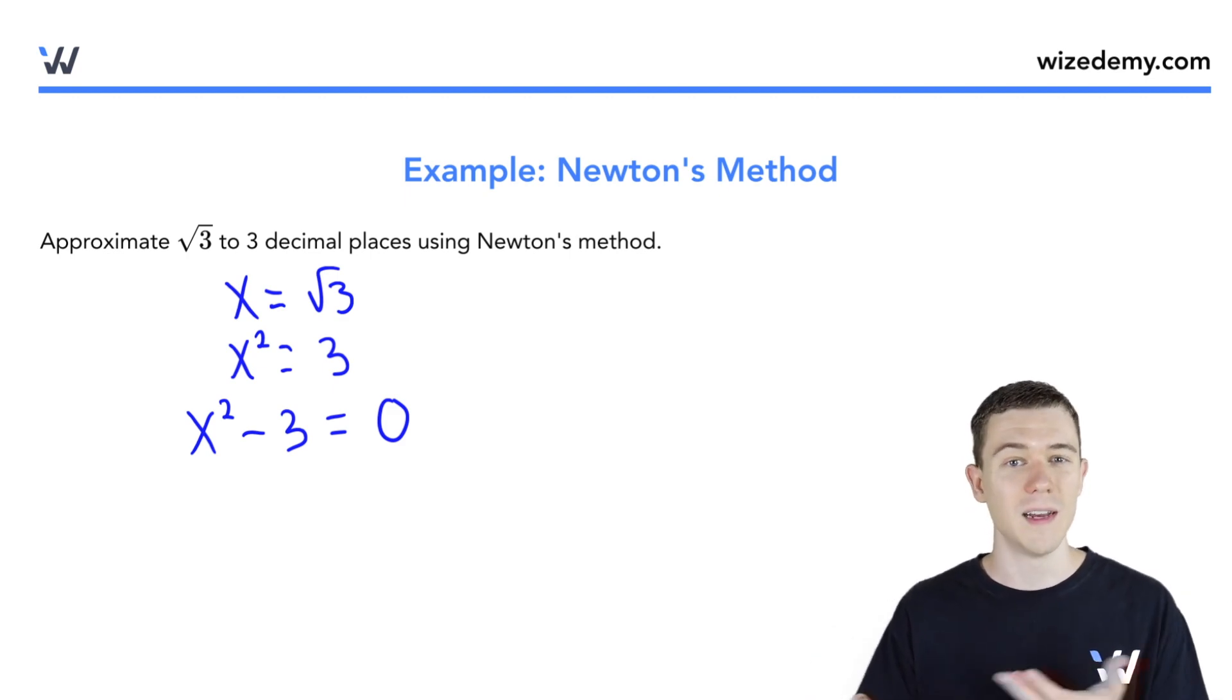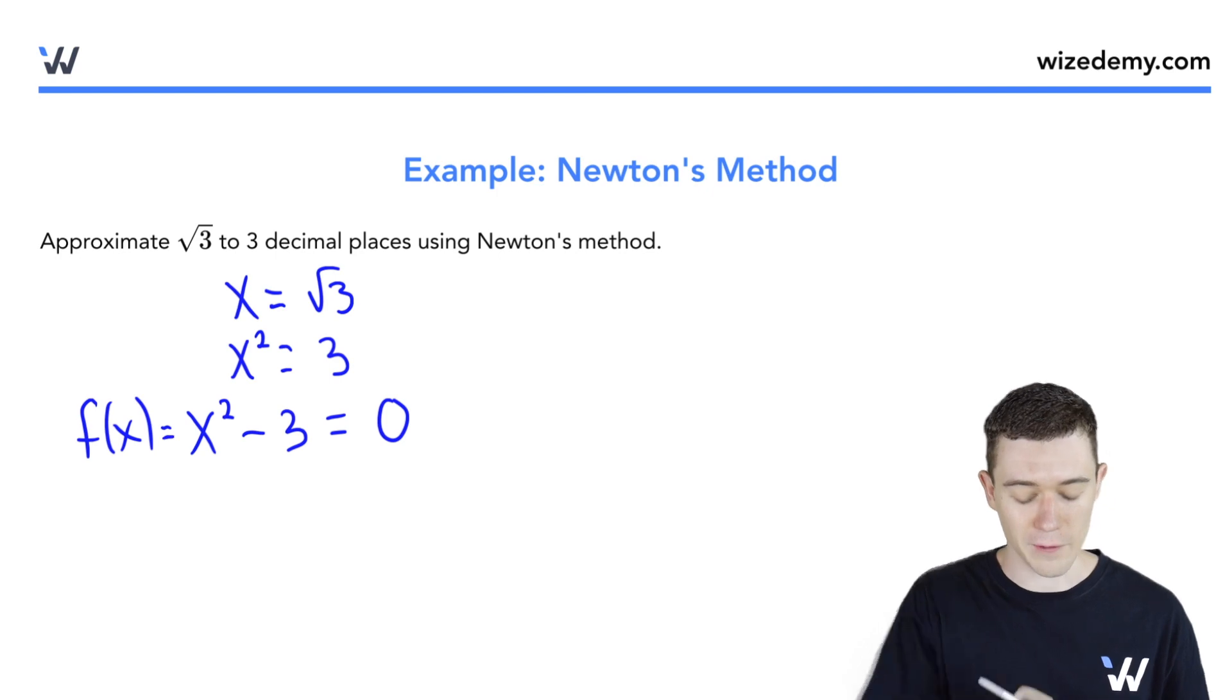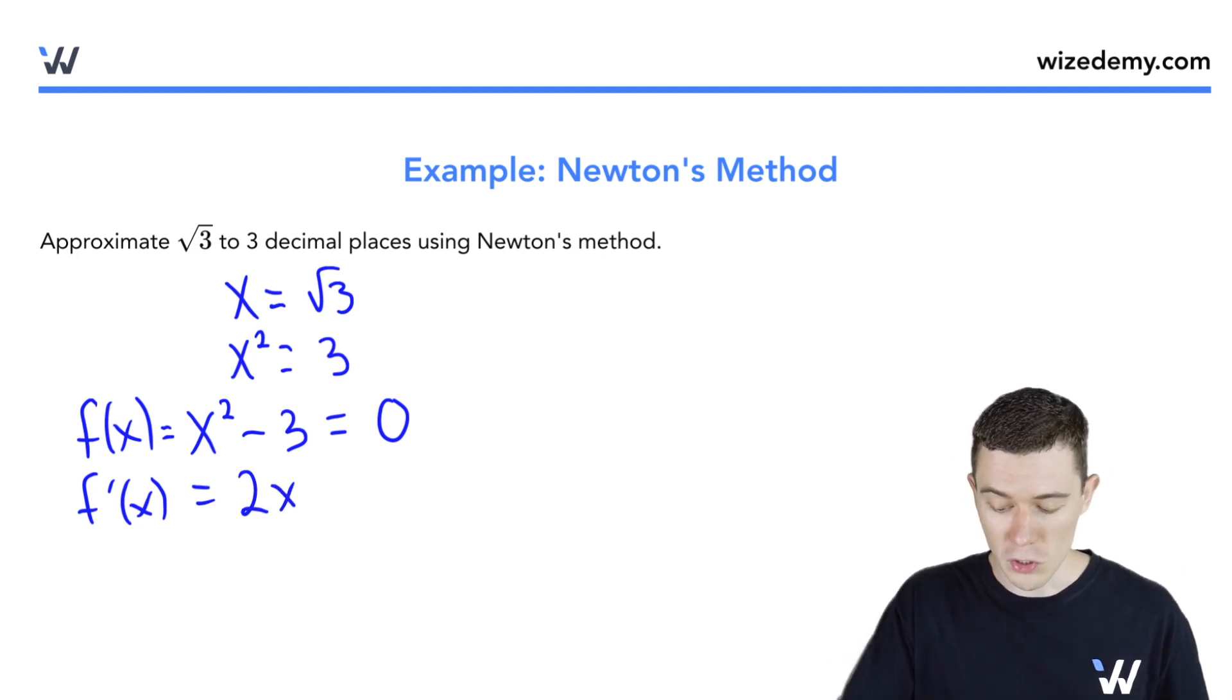We don't have any radicals, and this will be easy to take derivatives. So we'll define this function to be our f of x and its derivative. Just use the power rule here. The derivative of x squared is 2x. The derivative of minus three is zero. Now we can use Newton's method.